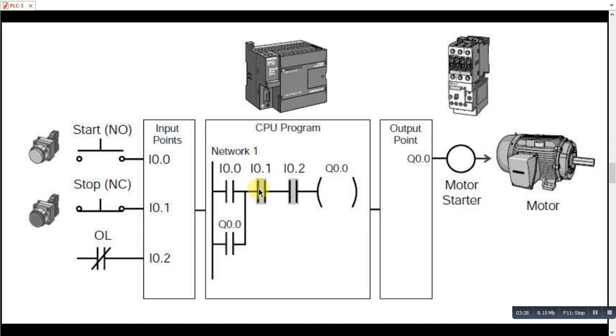So these two contacts will get true as they are in pressed state. So if we start the button, then this Q0.0 bit will get energized. Giving this contact close command and then the circuit, then the flow would be like this. And hence when the Q0.0 operates, it will operate your starter contactor and the motor will get started.